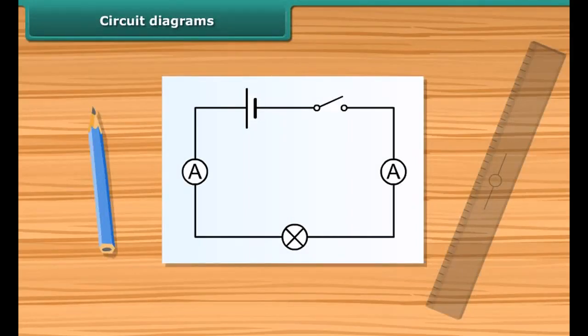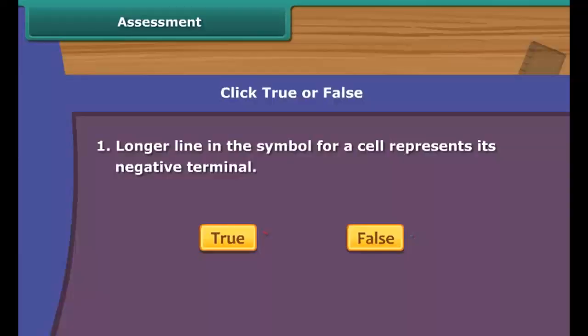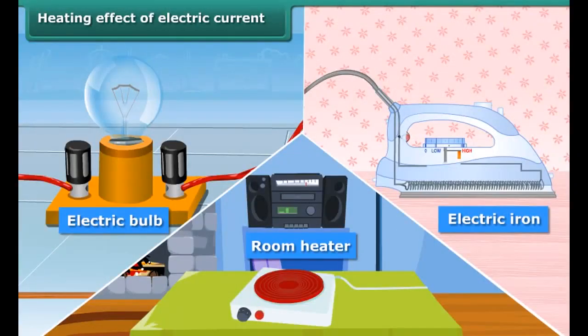A circuit diagram is a simplified representation of an electrical circuit. It is a drawing using standardized symbols of the arrangement, showing how electronic components are connected together.